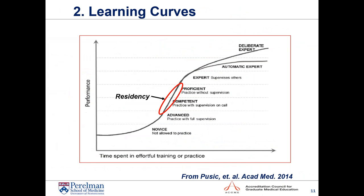Residents' learning curves are not nice linear 45-degree lines — they are sigmoidal, as shown in Martin Pusic's work. When residents come into our programs, they arrive as advanced beginners, having spent perhaps only 20 weeks in their specialty during medical school. Our goal is to get them to proficiency, and to track that development and keep them on the right trajectory, you have to observe.